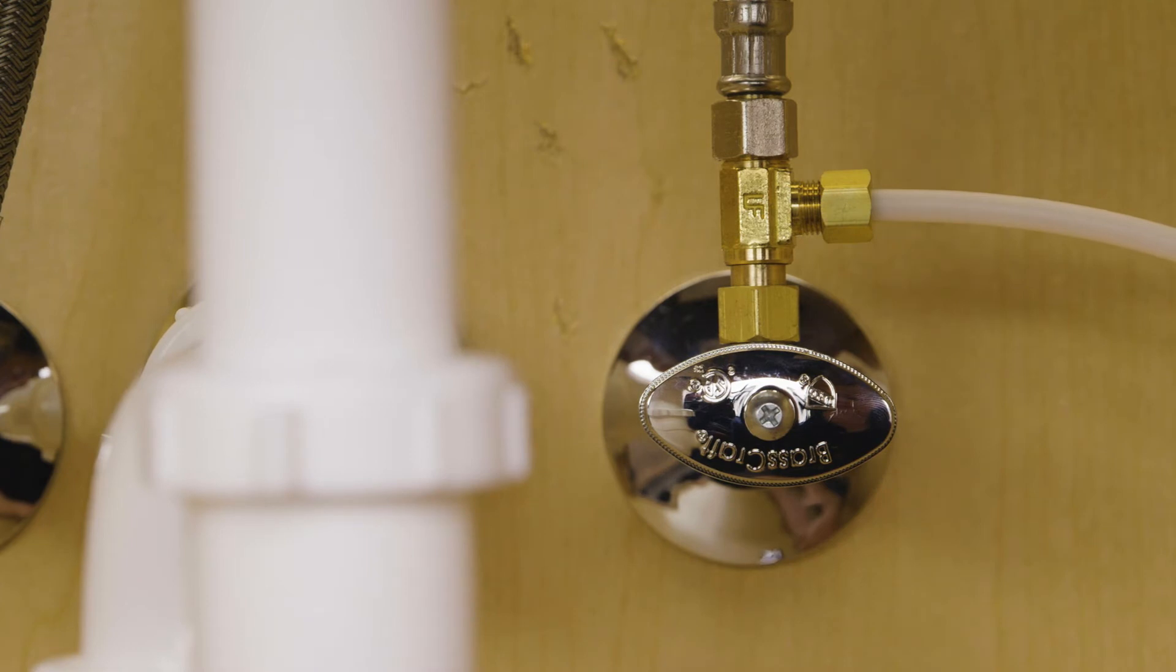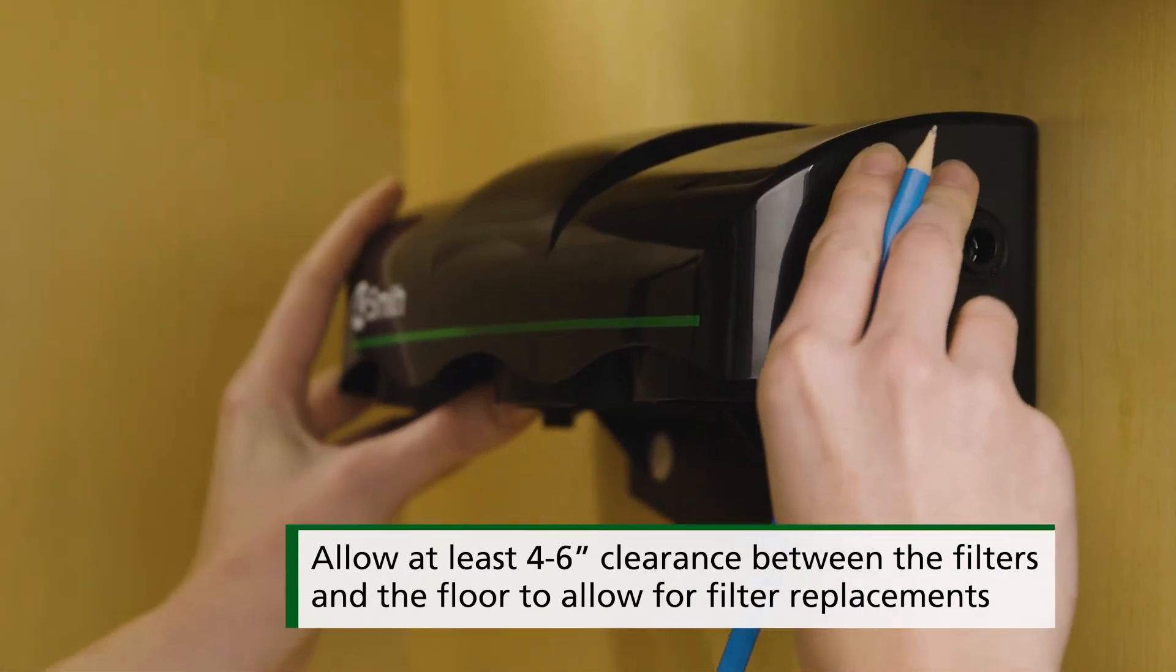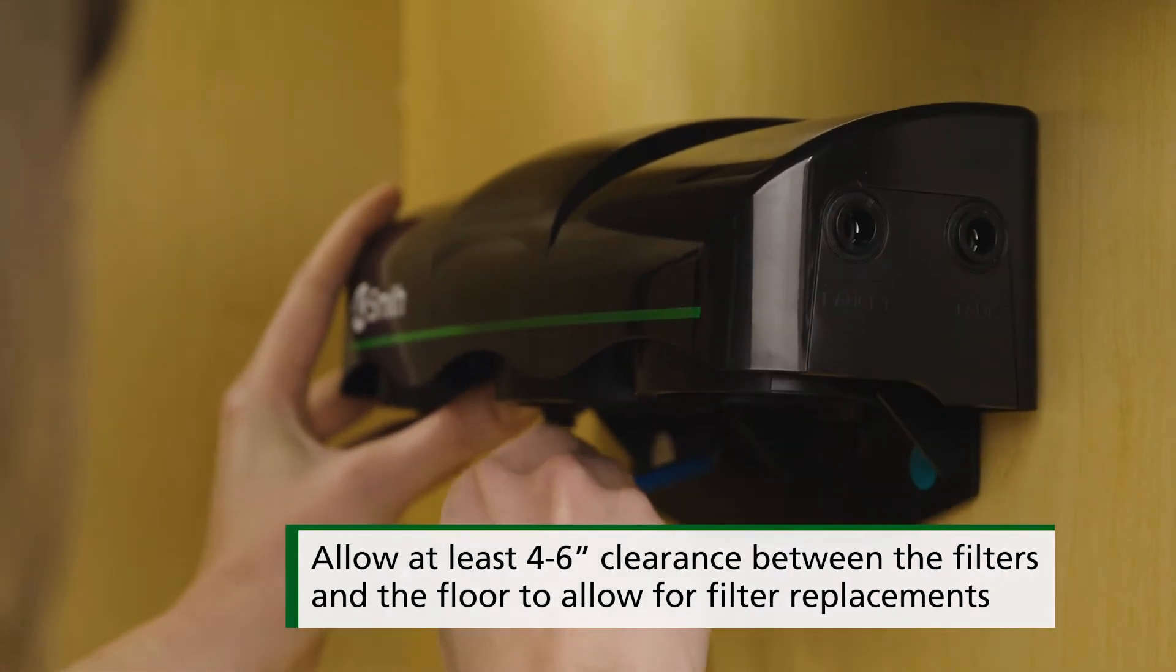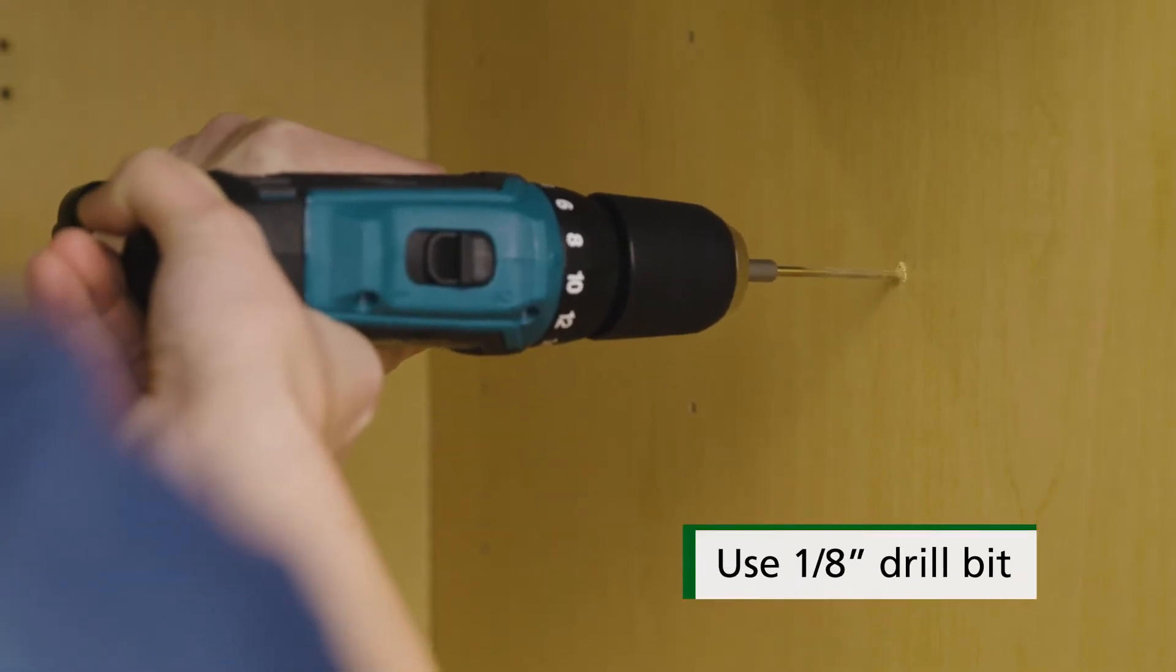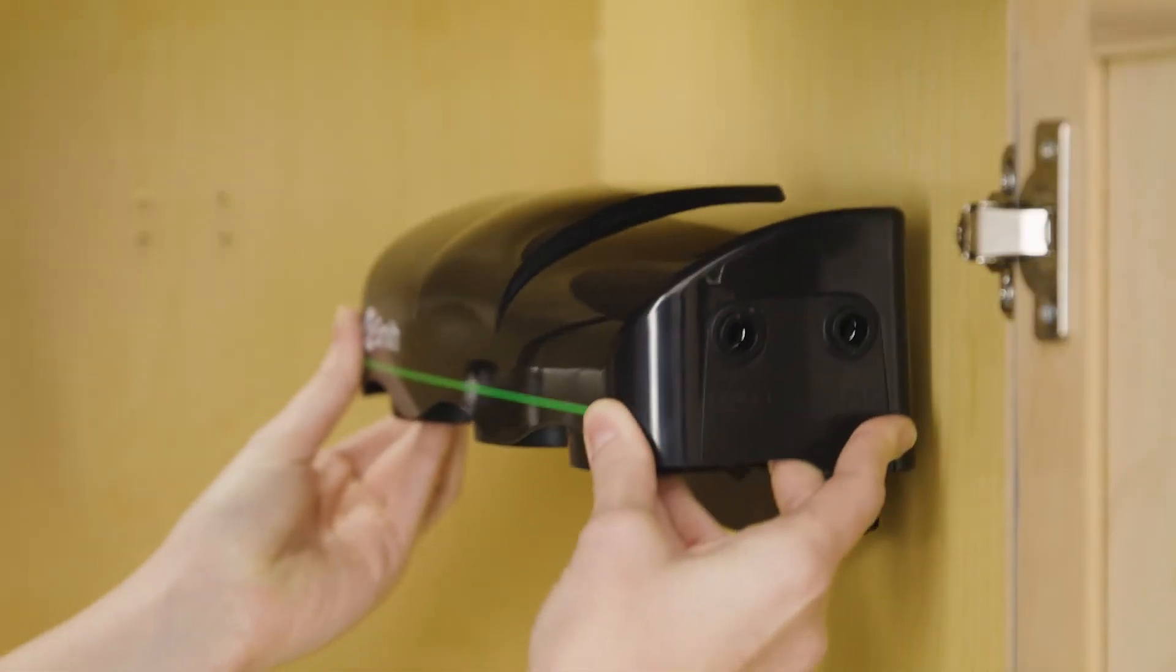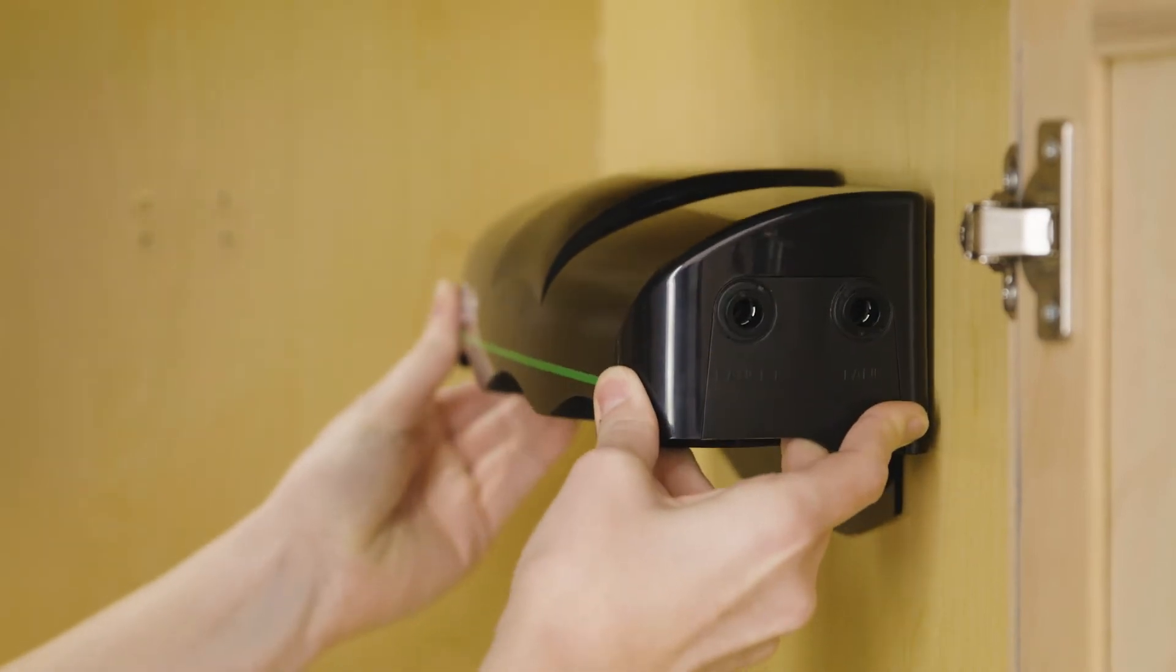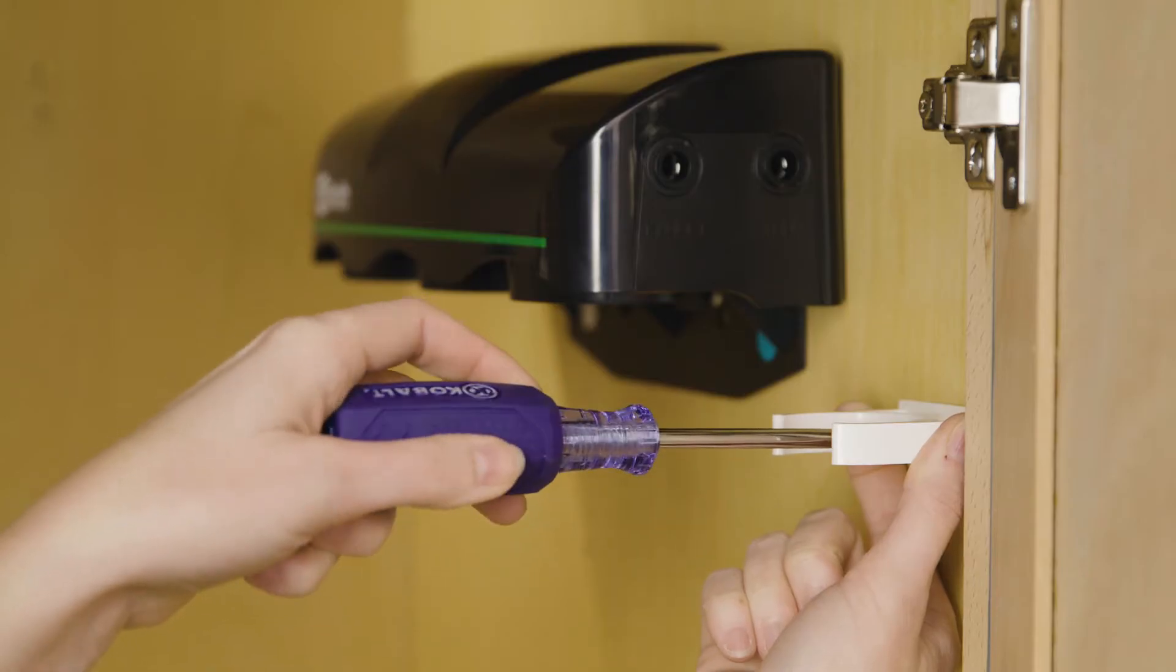The next step is to install the system manifold and remineralizer holder. Select an area to mount the system manifold and remineralizer holder under the sink. Mark your placements for mounting screws ensuring the holes are as level as possible. Drill two pilot holes and insert anchors and mounting screws. Then mount the manifold. Screw your remineralizer holder onto the wall.